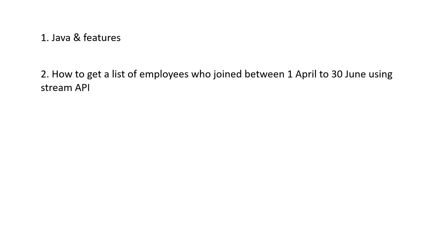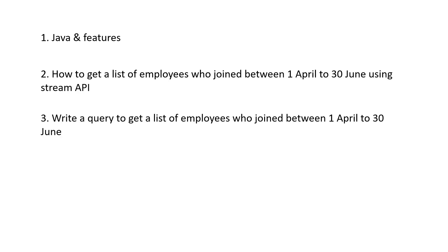The second question asked to the candidate was: how to get a list of employees who joined between 1st of April and 30th of June using Stream API. You can make use of the filter method or any other method provided in the Stream API.